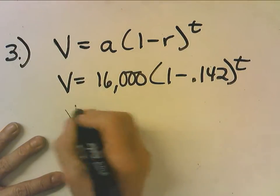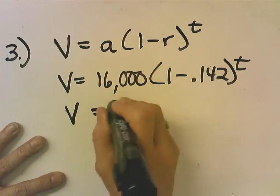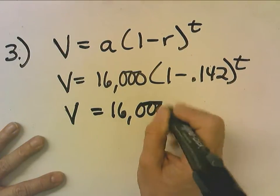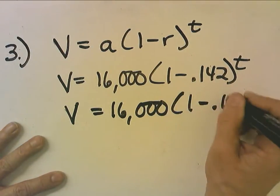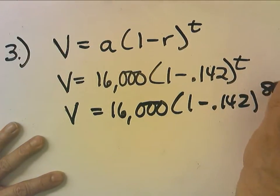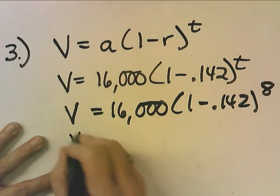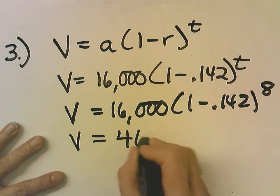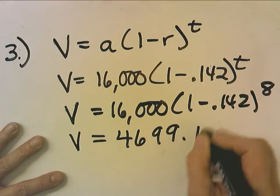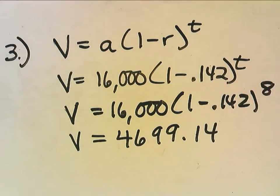Then, it tells me, let t be 8. Find the value when t is 8. So, now, I just plug in an 8 here, and I get value equals 4699.14.